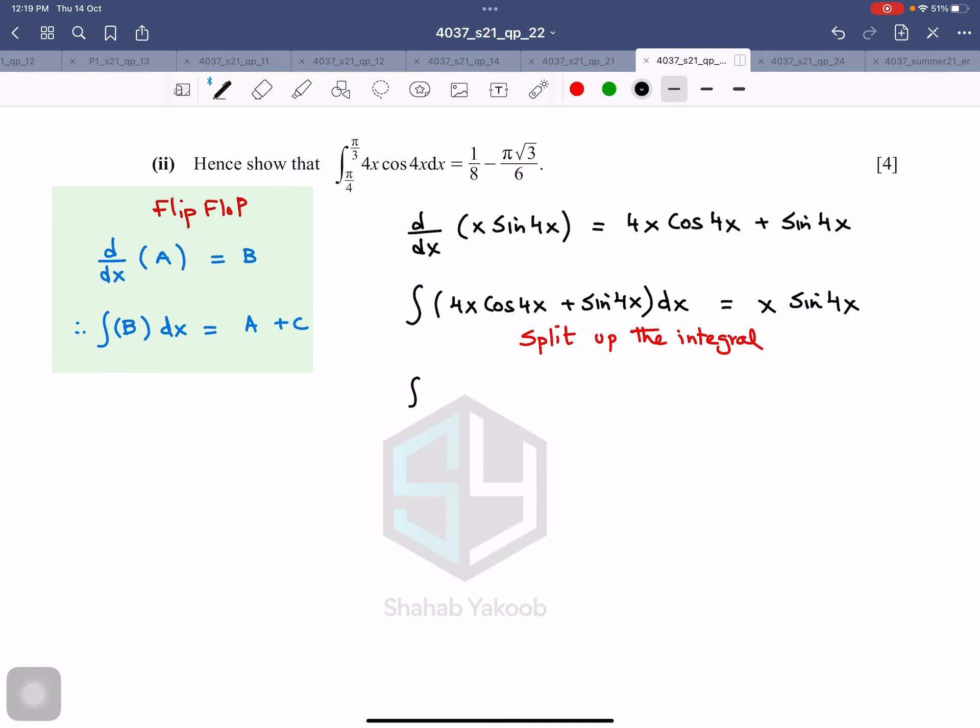What can be integrated will be integrated and will be shifted to the other side. So therefore, this is integral of 4x·cos(4x) dx plus integral of sin(4x) dx equals x·sin(4x). This is the subject of the equation. This is what you are out to evaluate. And this can be integrated. So therefore, I'll integrate it and I'll flip it.